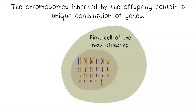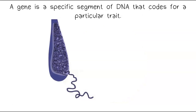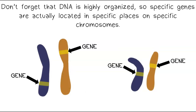The chromosomes inherited by the offspring contain a unique combination of genes. A gene is a specific segment of DNA that codes for a particular trait. Don't forget that DNA is highly organized, so specific genes are actually located in specific places on specific chromosomes.